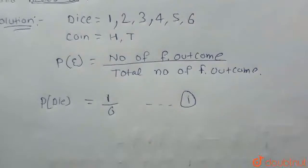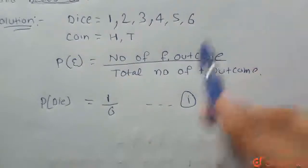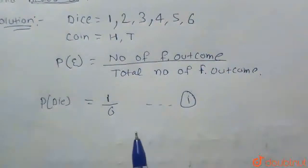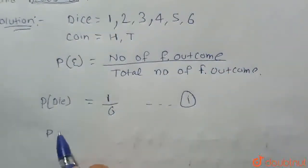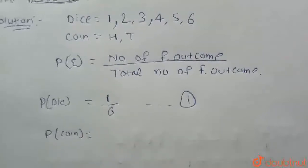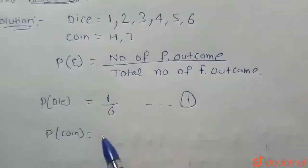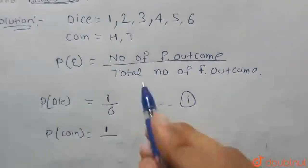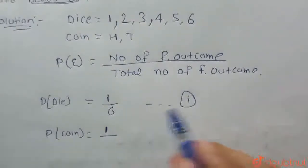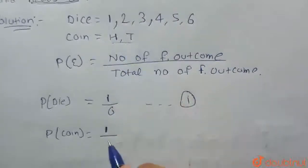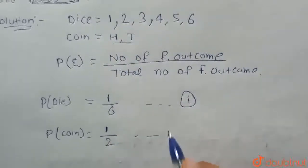Next, the coin will land heads up. Heads up means the favorable outcome is also 1. So for the probability of the coin, we put the number of favorable outcomes as 1 and the total number of outcomes for the coin — that is heads and tails — which is 2. So that gives us 1 upon 2. That is equation 2.